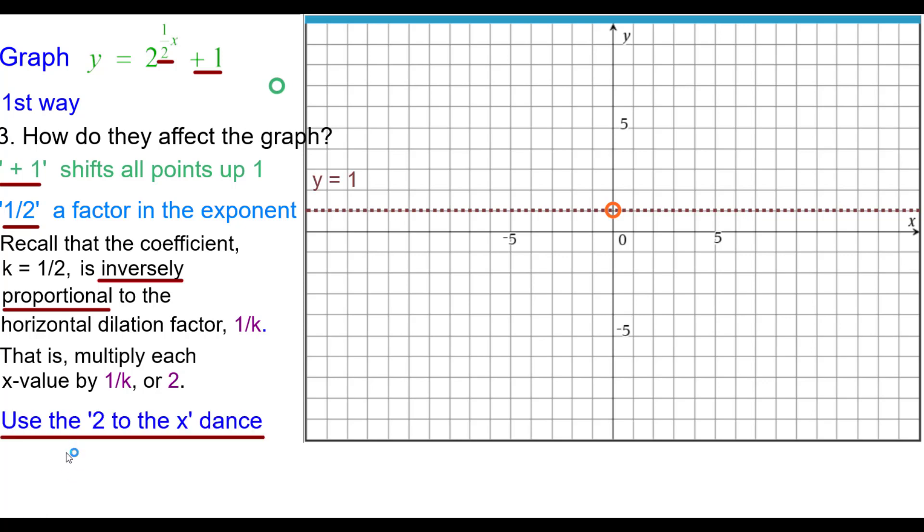So let's go ahead and do the 2 to the x dance. Normally we go right 0 up 1. In this case we'll also go right 0 up 1 because when we double the 0 it's still 0 and going up 1 because 2 to the 0 power is 1, plotting relative to this new origin. Normally we go right 1 up 2 in the 2 to the x dance. In this case we're going to go right 2 up 2 because we have to double each x coordinate.